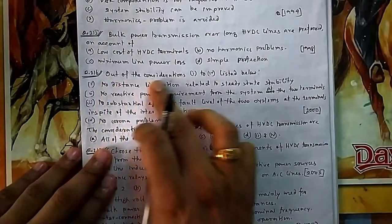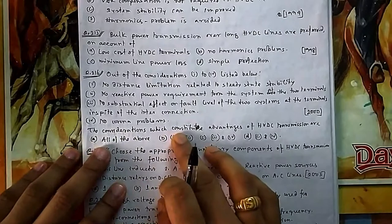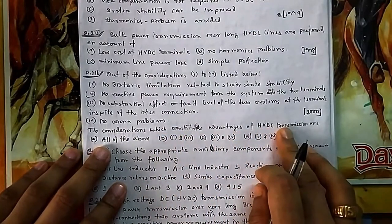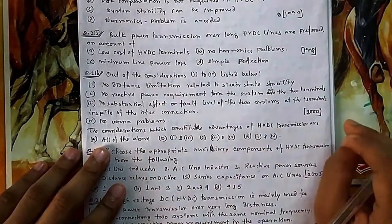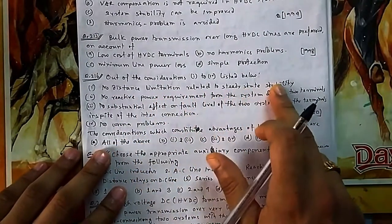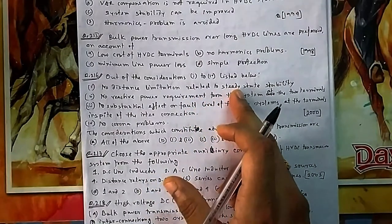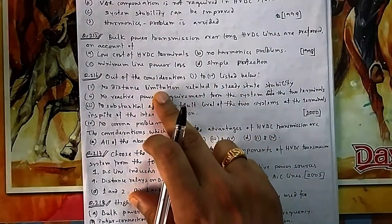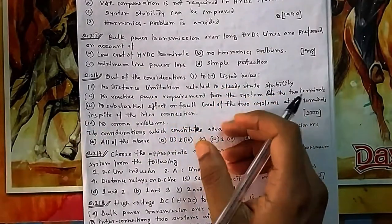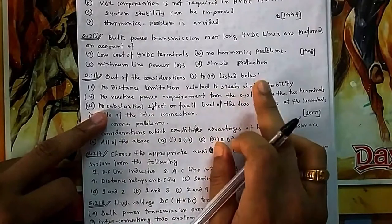In question number 216, out of considerations 1 to 4 listed below, which constitute advantages of HVDC transmission? No distance limitation related to steady state stability — this is correct because steady state stability improves in HVDC, so there is no distance limitation. For AC there is a distance limitation, but for DC that is not the case.